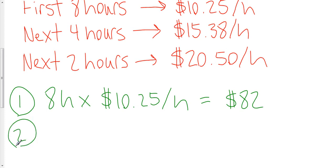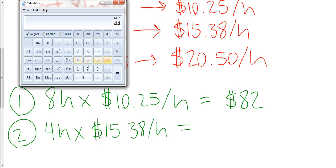And our second calculation is for those four hours that follow at time and a half. So that's going to be four hours at $15.38 an hour. Four times $15.38. Oh, that must have got 44 there. Four times $15.38 is $61.52.